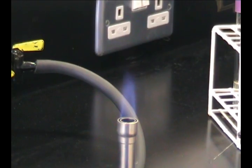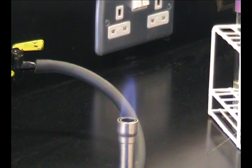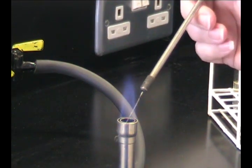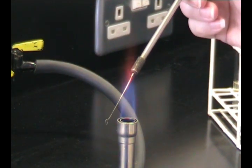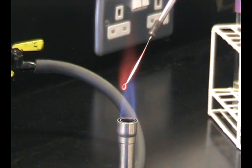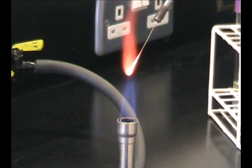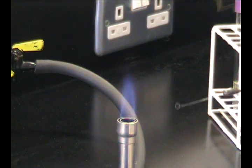Before you start work, the first thing you need to do is sterilize your loop. Pass your loop through the flame, pulling it up through the top of the blue cone until it glows red hot. Remove it from the cone and allow to cool. Do not put it down on the bench.